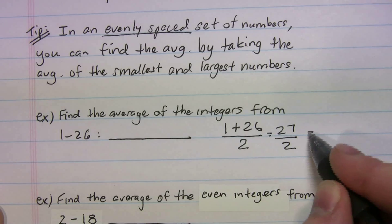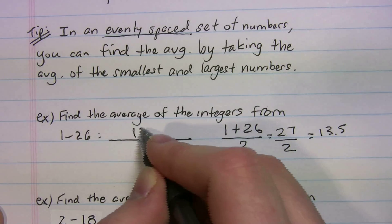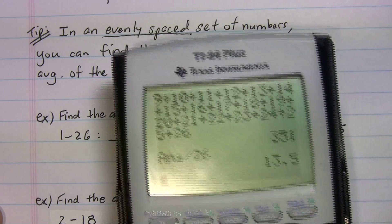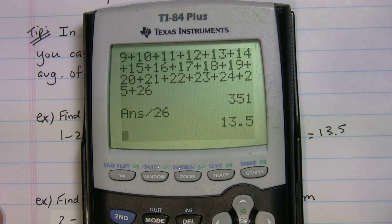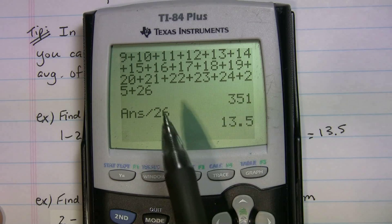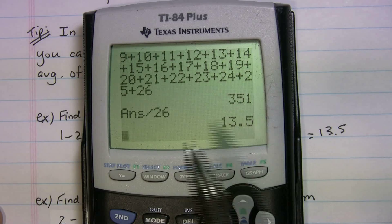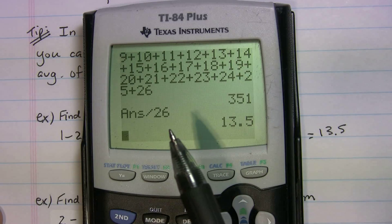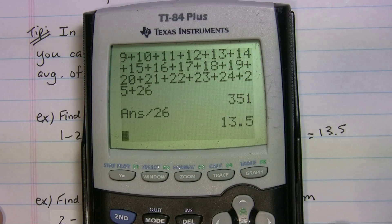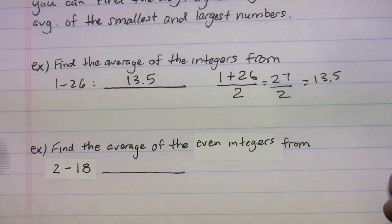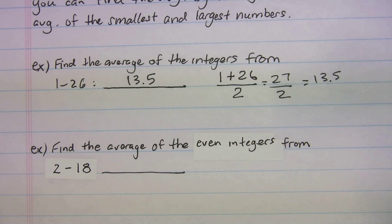So that's 27 divided by 2, which gives you 13.5. And I actually ended up doing it before just to double check to make sure it works. But if you look on the calculator there, I ended up actually adding everything up. You can't see it on the top there, but we got 351. When you add it all up, you divide by 26 numbers and we get 13.5. So that trick works. Nice little shortcut.